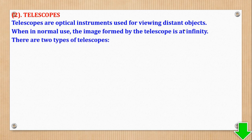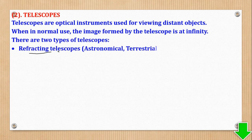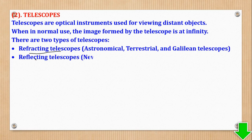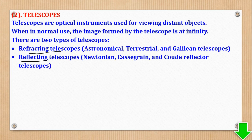There are two types of telescopes: refracting and reflecting. We are interested in the astronomical and Galilean telescopes, as those are the ones which involve calculations.